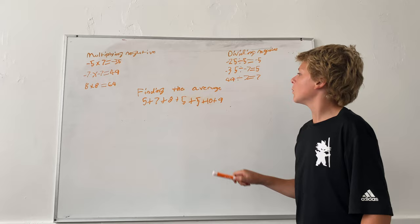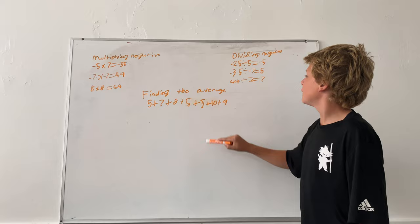5 plus 7 is 12, plus 8 is 20, plus 5 is 25, plus 5 is 30, plus 10 is 40, and plus 9 is 49.